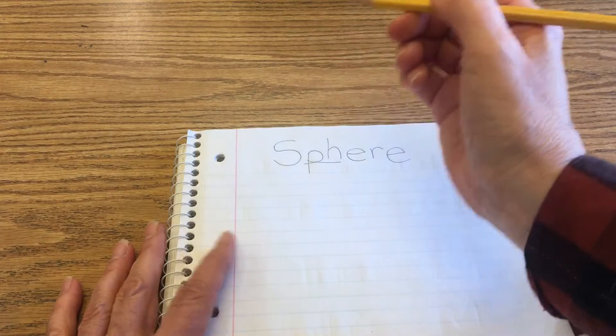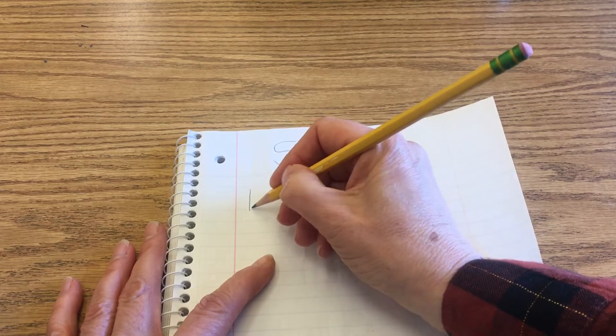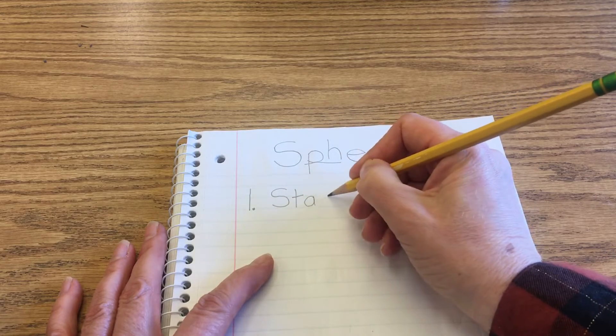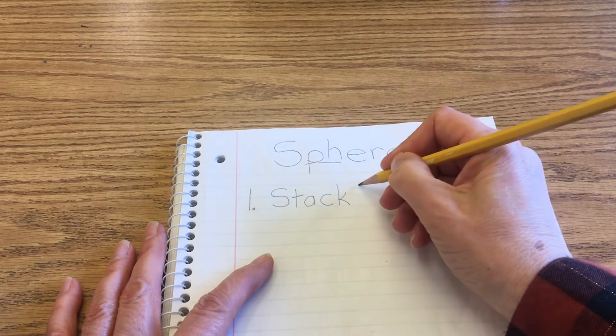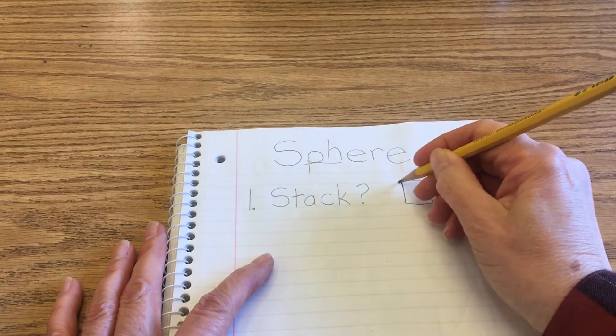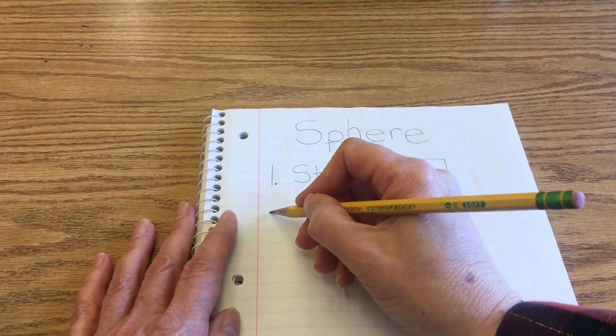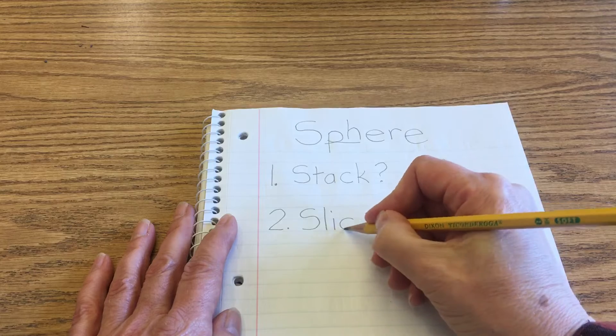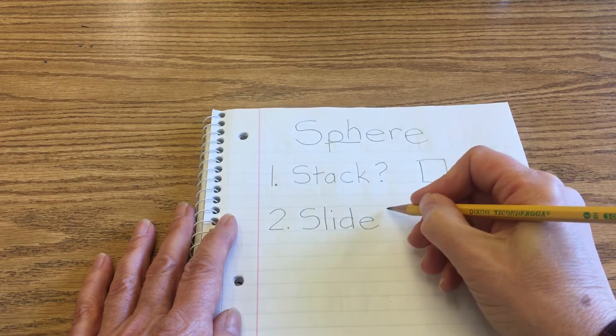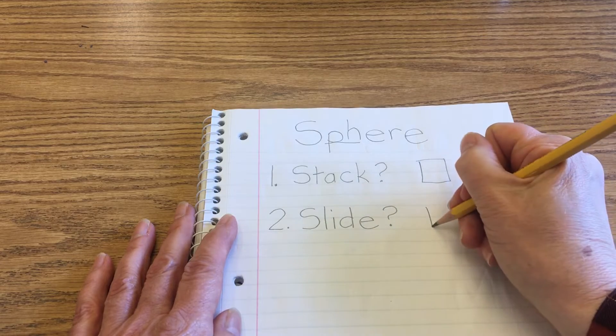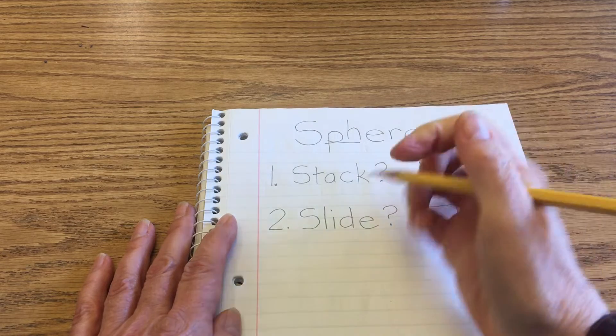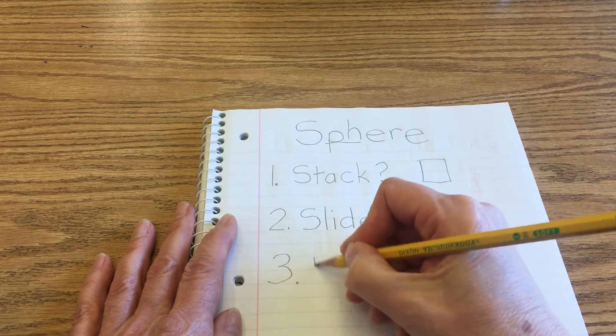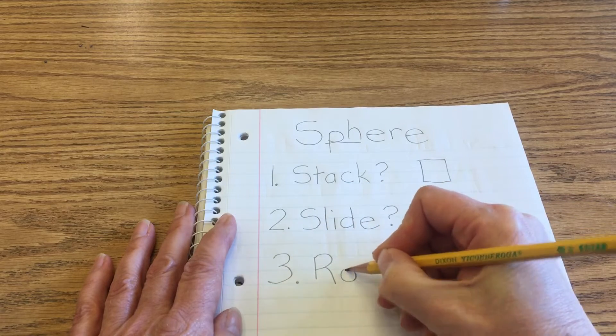So number one. We're going to write stack. S-T-A-C-K. Stack. And our question mark. Number two. Slide. S-L-I-D-E. And if I'm going too fast for you, go ahead and pause the video at any time so that you can catch up. So we've got one stack, two slide. And then for number three, we have roll. Those are the properties of our 3D shapes.